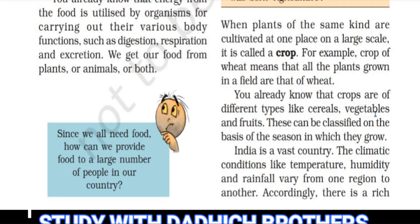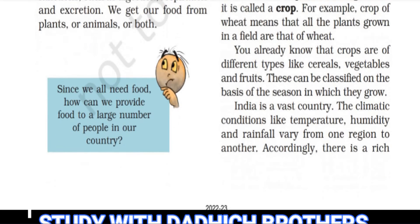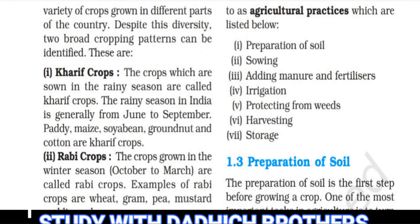Crops can be classified by the season in which they are grown. India is a vast country. The climatic conditions like temperature, humidity and rainfall vary from one region to another. Accordingly, there is a rich variety of crops grown in different parts of the country. Despite this diversity, two broad cropping patterns can be identified: Kharif Crops and Rabi Crops.